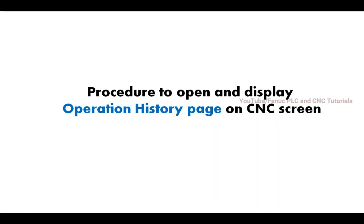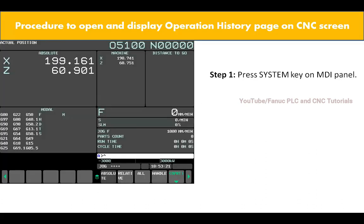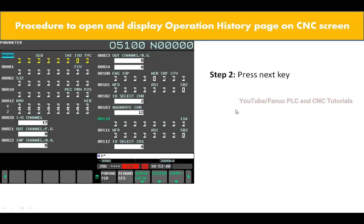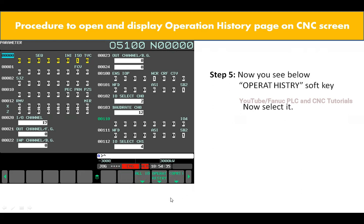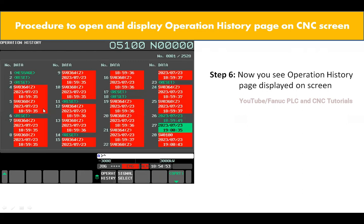Now, how to open this screen on CNC? The procedure to open and display the operation history page on CNC screen: first, press the System key. When you press System key you will get this page. Now press Next key, again press Next key, and again press Next key. Now you can see here 'Operation History' below — select that option and you will see the operation history page.